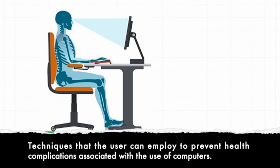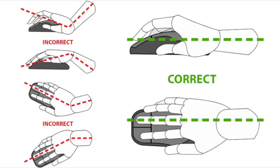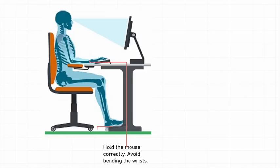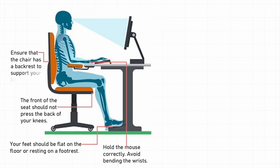And last but not the least, placing the computer monitor at an inappropriate eye level. The following are techniques that the user can employ to prevent health complications associated with the use of computers: hold the mouse correctly, avoid bending the wrists. Your feet should be flat on the floor or resting on a footrest. The front of the seat should not press the back of your knees. Ensure that the chair has a backrest to support your lower back.